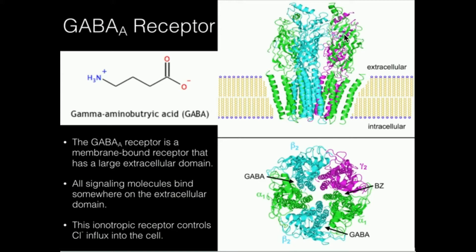Specifically, the chloride ion moves from the extracellular side into the cell to the intracellular side. The net effect of this is that it hyperpolarizes the neuron membrane. These GABA-A receptors are located in neuron membranes, normally in the dendrites and the cell body of the neuron. Whenever there's enough GABA binding to all these receptors in the membrane, the cell will hyperpolarize and that neuron will be inhibited.